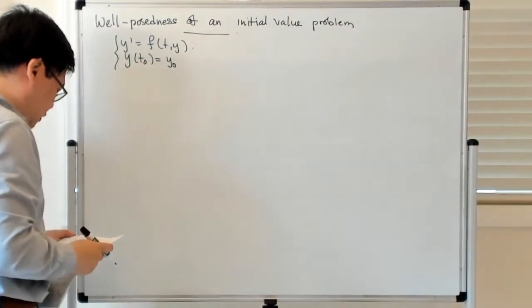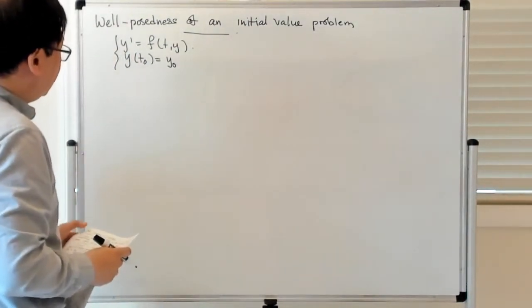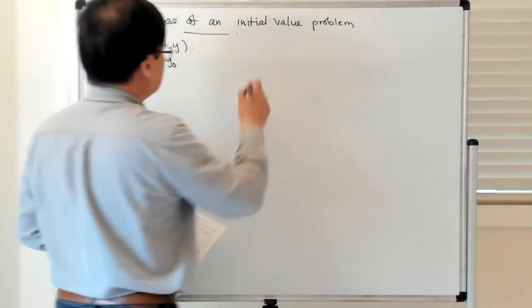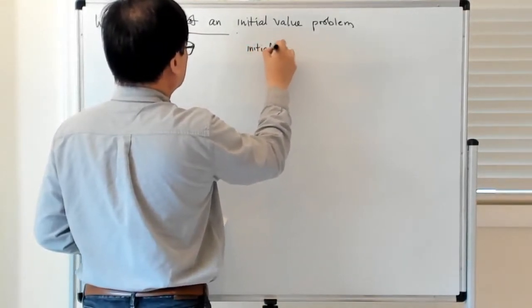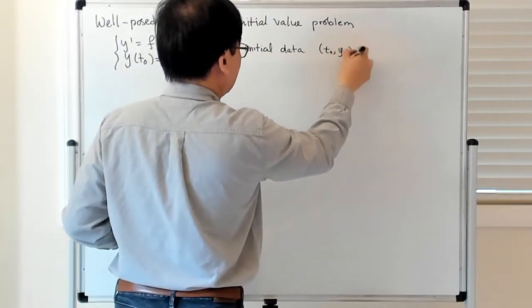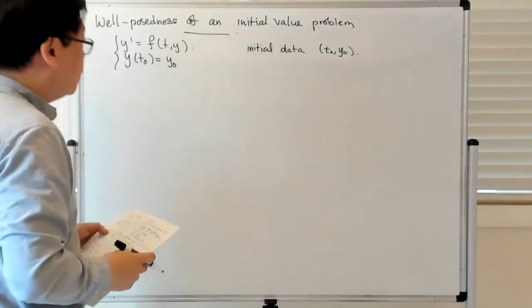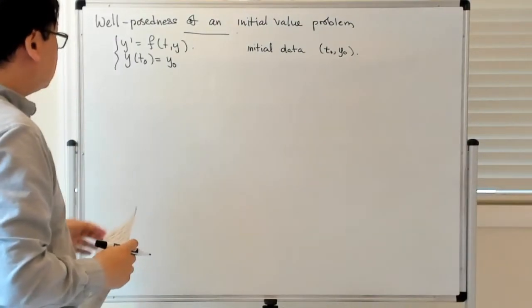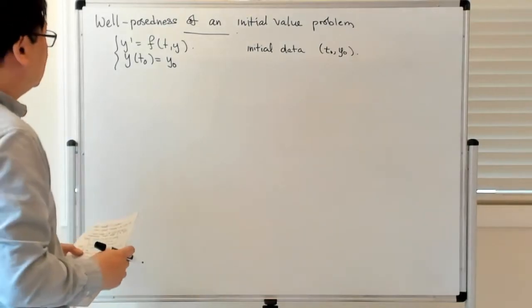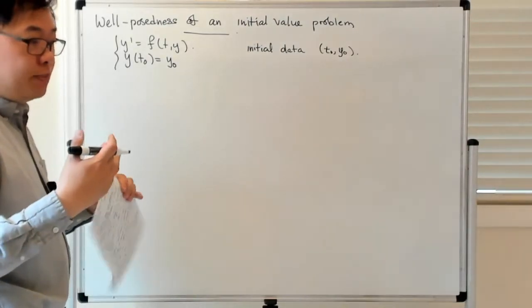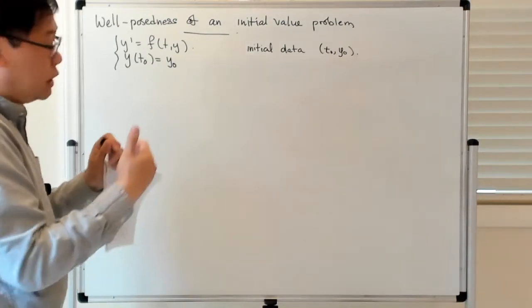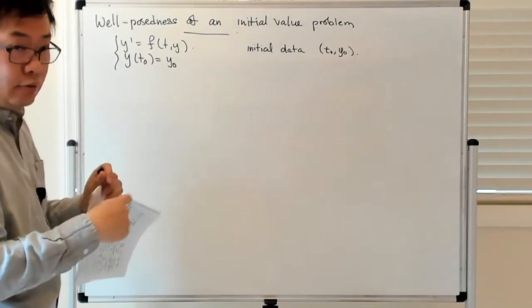The basic idea behind this is that you have initial data — both the initial time t₀ and the initial value y₀. So for a fixed t₀ and y₀ you have a particular solution. Well-posedness speaks to the question of how that solution varies as you change t₀ and y₀.